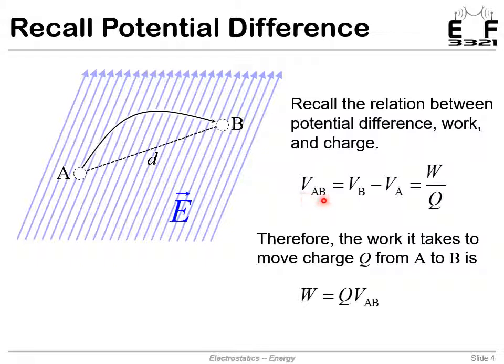The potential difference VAB was VB minus VA, which was also the work divided by the charge that we moved. The conclusion is the total work was the charge times the potential difference. It had a very simple answer in the end.